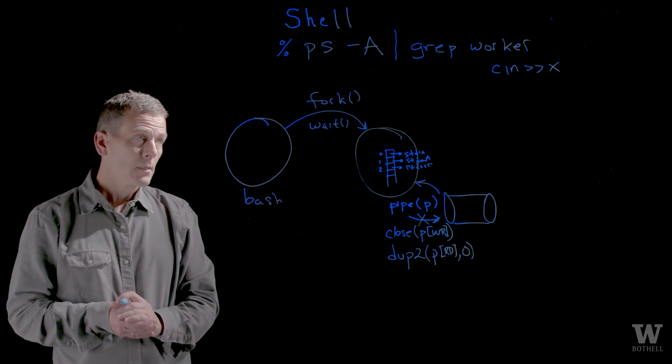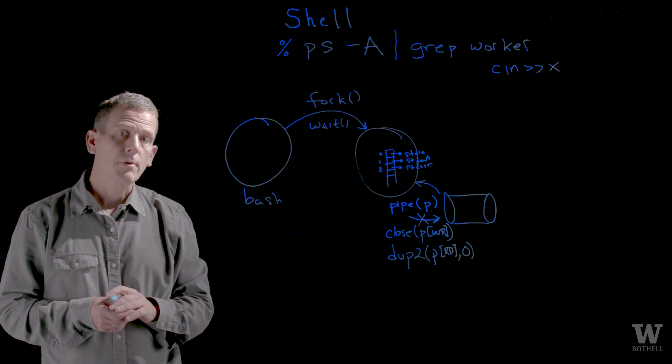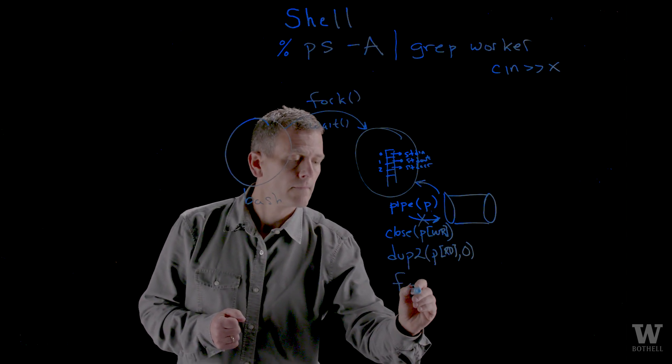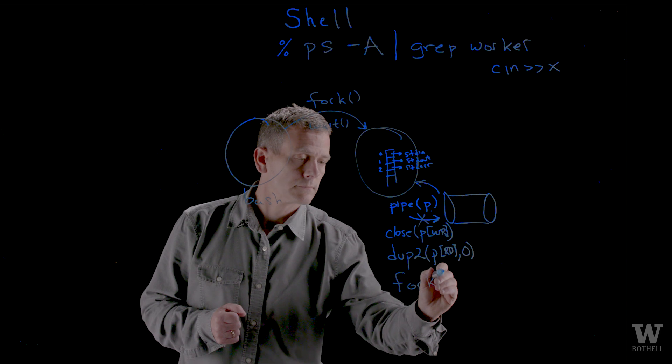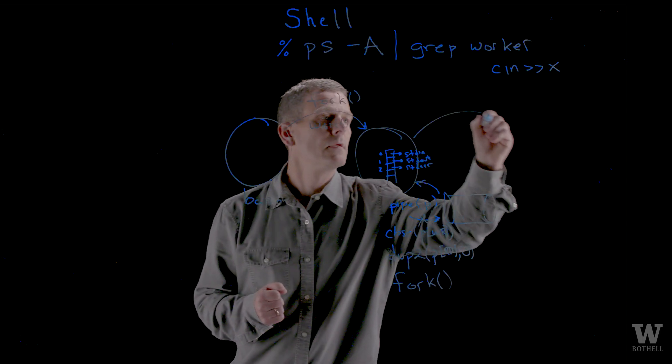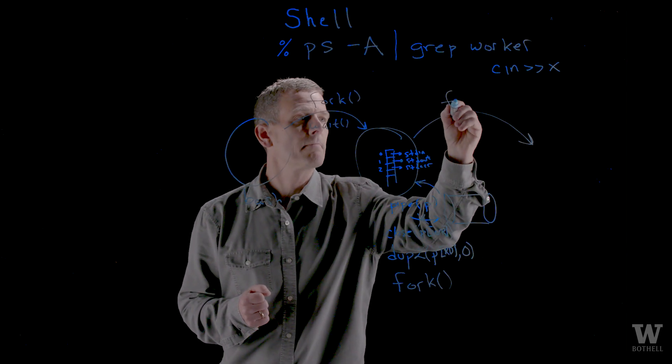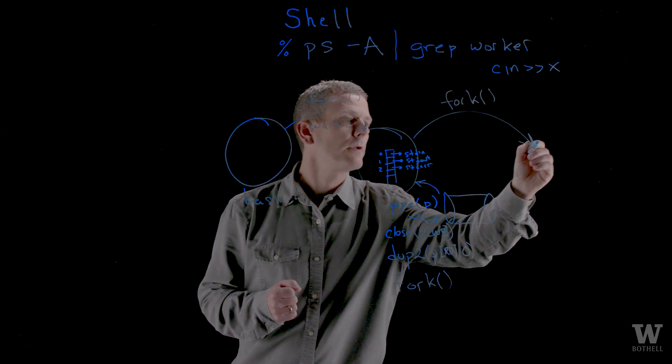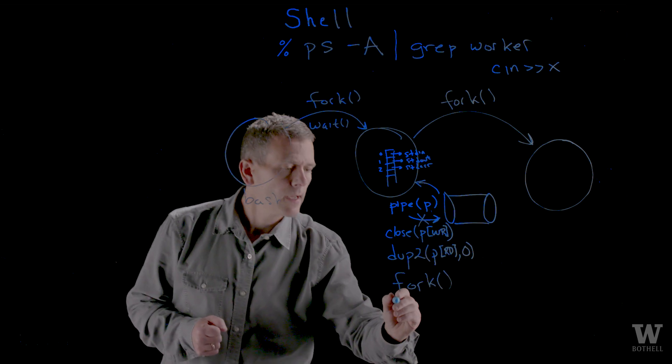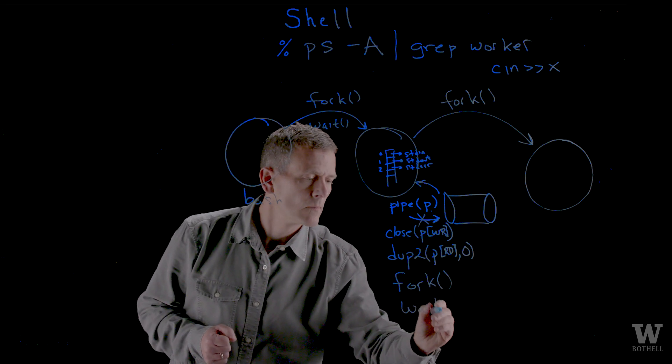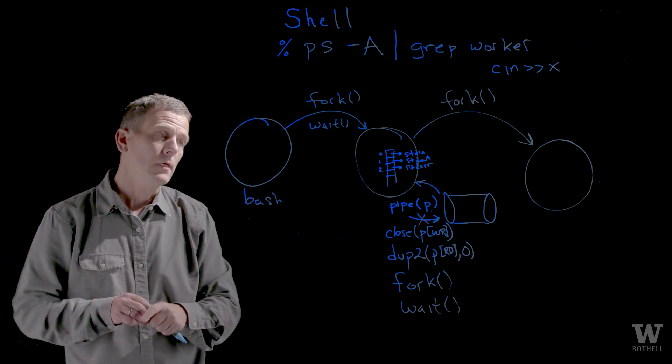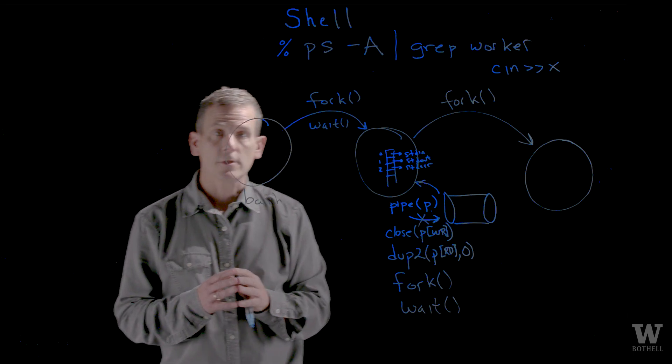Now, I'm ready to create the process that will run the PS. And so I call fork. And this creates another child process. That's the same fork. And then I wait. This process is waiting for the grandchild process, in this case, to finish.